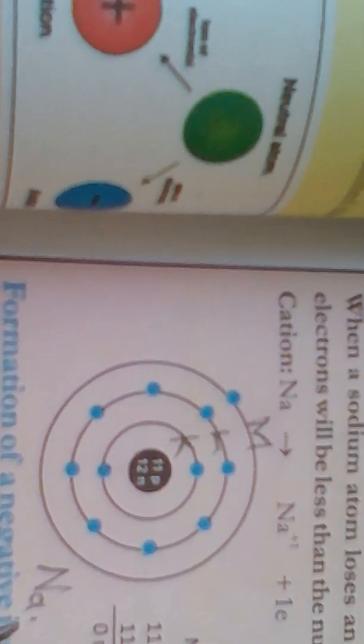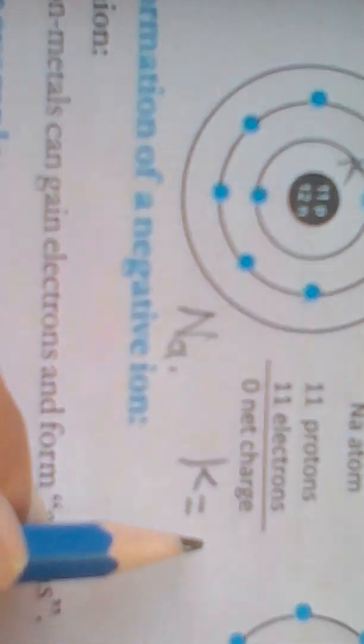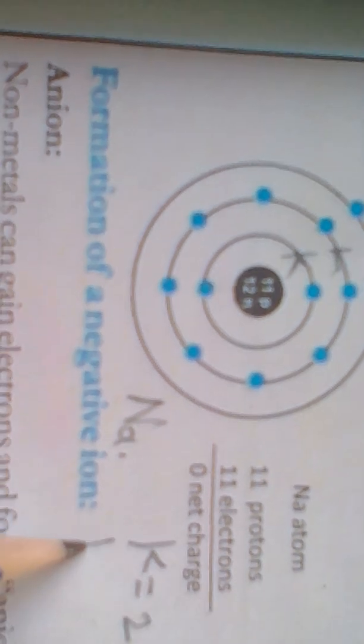So if we write its electronic configuration, we can say that K is equal to 2 electrons, L is equal to 8 electrons, and M shell has 1 electron.